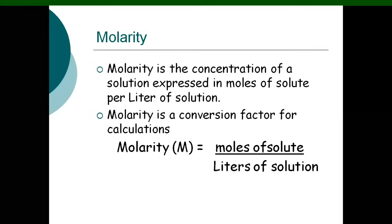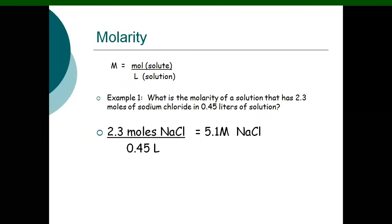For example, what is the mole of sulfuric acid? The molecular weight of sulfuric acid is 98. That means if 98 grams of sulfuric acid is dissolved in one liter of solution, that is known as one molar. Example: what is the molarity of a solution that has 2.3 moles of sodium chloride in 0.45 liters of solution? 2.3 moles divided by 0.45 liters gives 5.1 M sodium chloride.